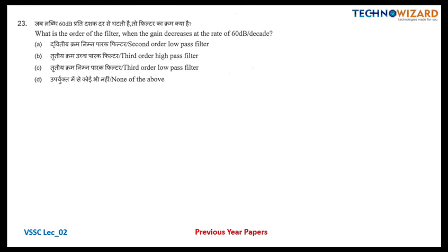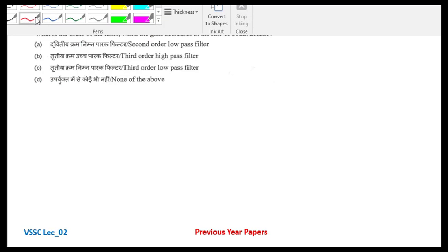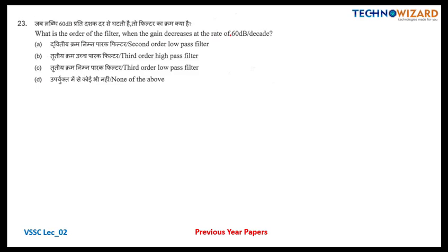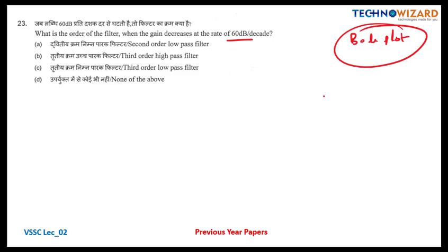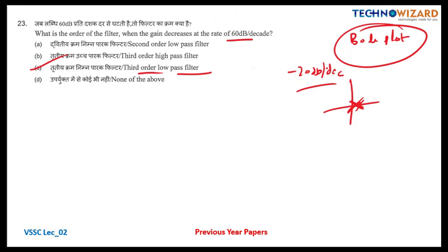Question number 23: what is the order of the filter when the gain decreases at the rate of 60 dB per decade? If you have studied Bode plots, if a single pole is at the origin, the Bode plot starts from minus 20 dB per decade. Now if there are three continuous poles at the origin, the Bode plot starts from 60 dB per decade. So this is a third order low pass filter — option C is the correct answer.